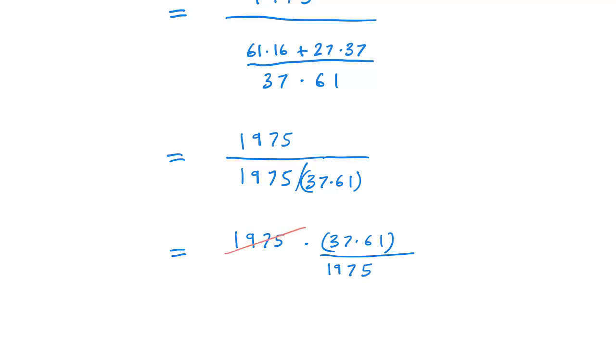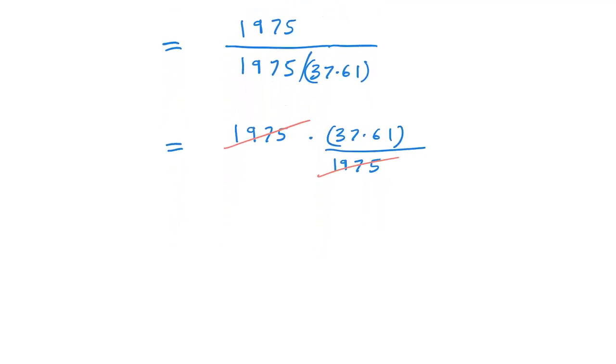1975 appears on the top and bottom. They are inverse pairs, so they cancel out. Now we're left with this integer, 37 times 61. We want to know what that integer is when we divide by 9 and find the remainder.